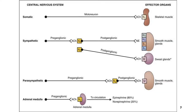This diagram represents the organization of the autonomic nervous system, with the somatic nervous system included for comparison. The somatic nervous system sends a motor nerve towards the skeletal muscle, and the junction between the motor neuron and the effector organ is known as the neuromuscular junction. Its motor neuron releases the neurotransmitter acetylcholine.